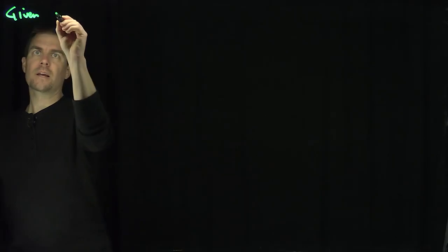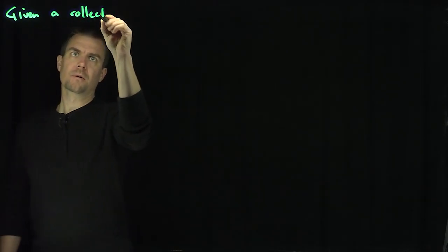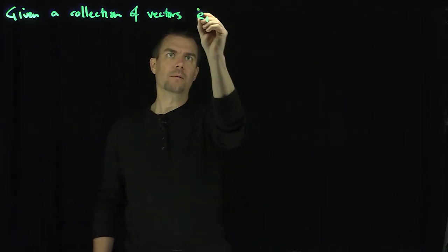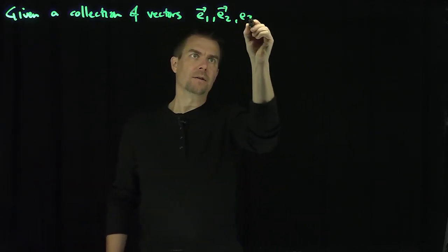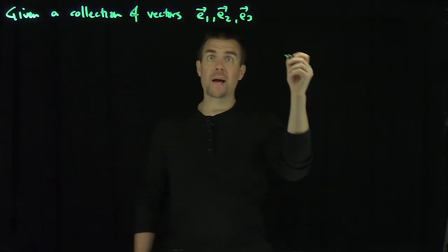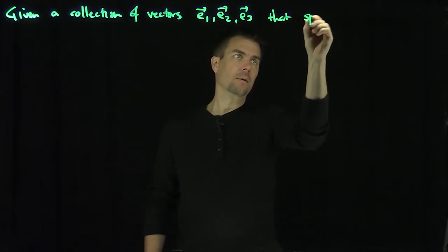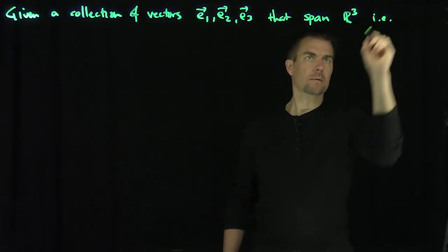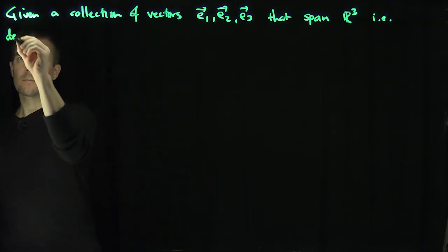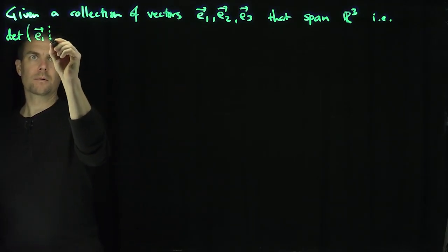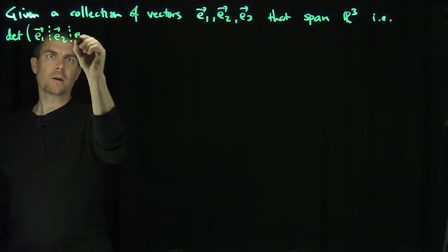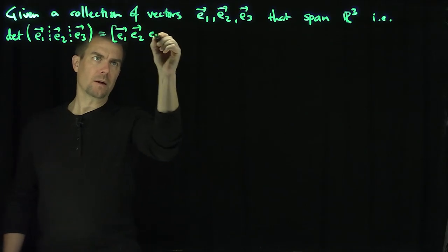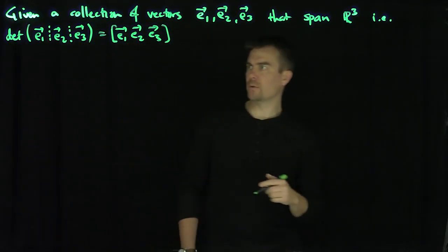Let's be given a collection of vectors. Let's do this in R3. E1, E2, and E3 that span R3, i.e., the determinant of E1, E2, E3, which I'm going to abbreviate as just E1, E2, E3, like this, just for shorthand notation.